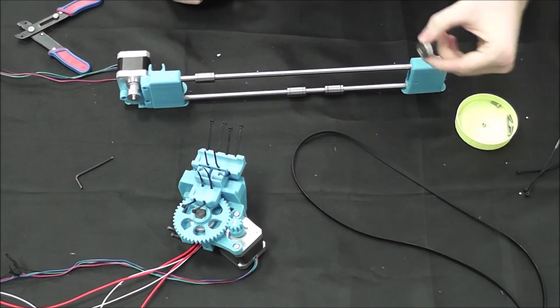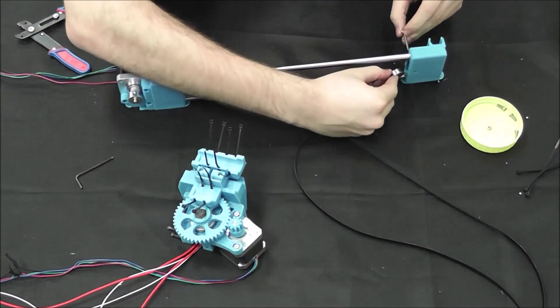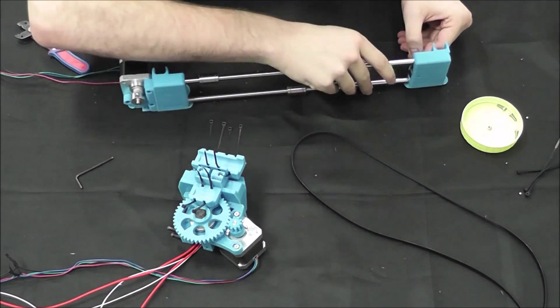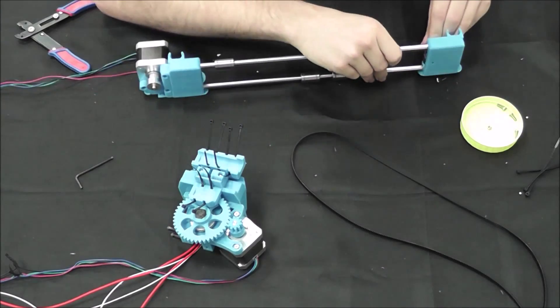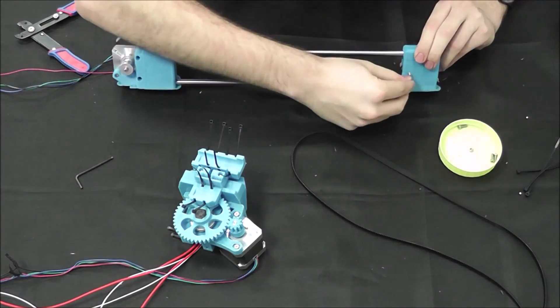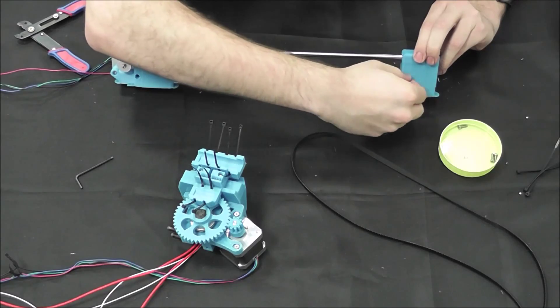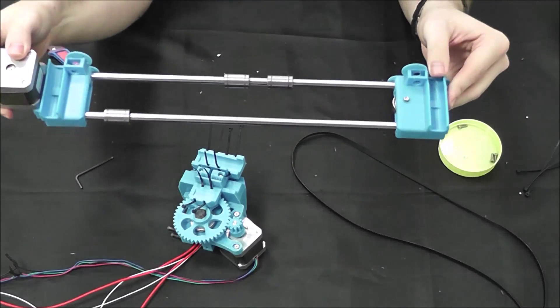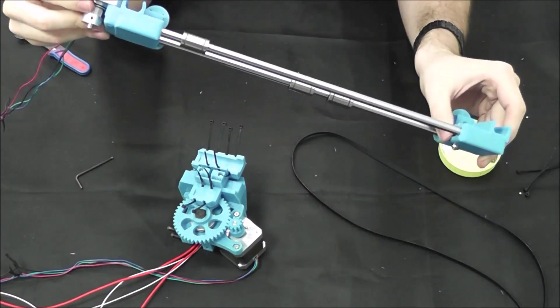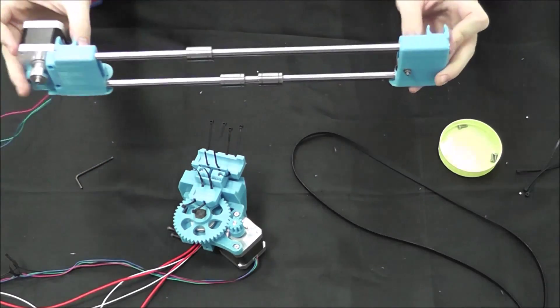Next we're going to go ahead and put our 608 ZZ bearing inside of the opposite end that we have the motor on. We're going to do that using our M3. It should come out through the back, throw a washer and a nut on that side and tighten it up a bit. So here we have the two smooth rods fitted between the x motor mount and the x idler. Our bearing is in, our pulley is on the end of the motor, and our linear bearings are positioned on the axis.